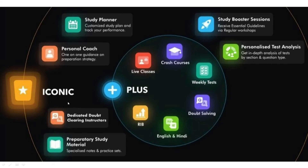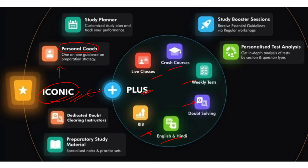There are two subscription types — Iconic and Plus. The Iconic subscription includes a personal coach, dedicated doubt clearing, and personalized coaching from high-rank holders — ideal for students targeting IIT in the future. The Plus subscription includes live classes, crash courses, weekly tests, and doubt solving. The main feature of Iconic is personal coaching and a study planner, which is why Iconic is recommended over Plus.